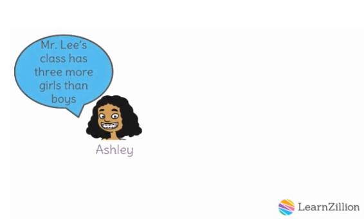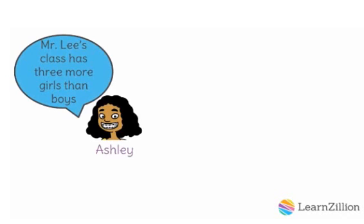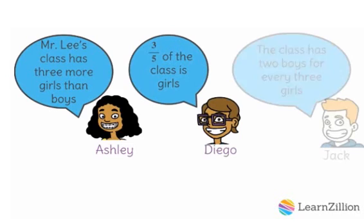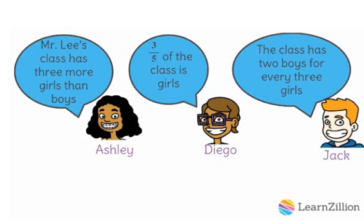Ashley, Diego, and Jack are making statements about the number of students in their class. Ashley says Mr. Lee's class has three more girls than boys. Diego says three-fifths of the class is girls. Jack says the class has two boys for every three girls. Which student or students do you agree with? Explain why you agree or disagree with each statement. What are the similarities and differences between each student's sentence? Explain your thinking.